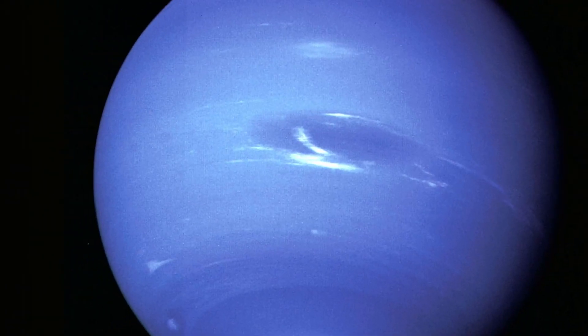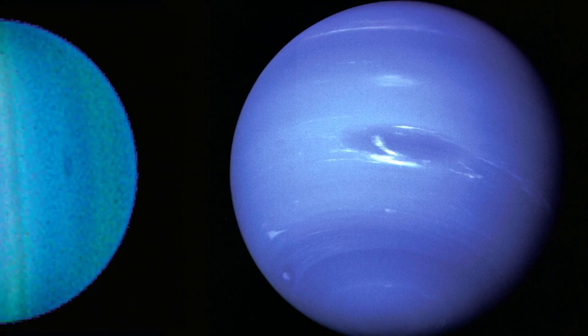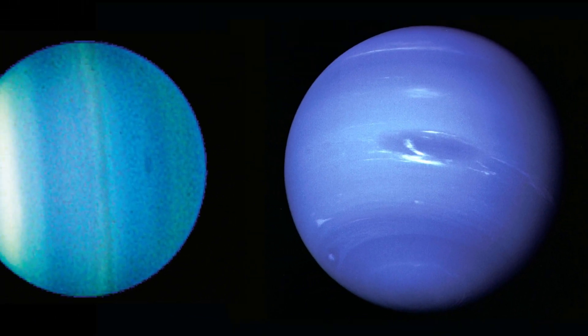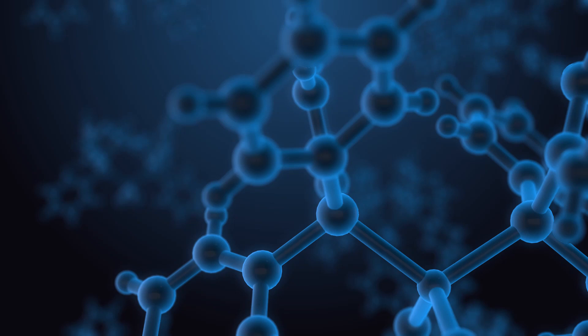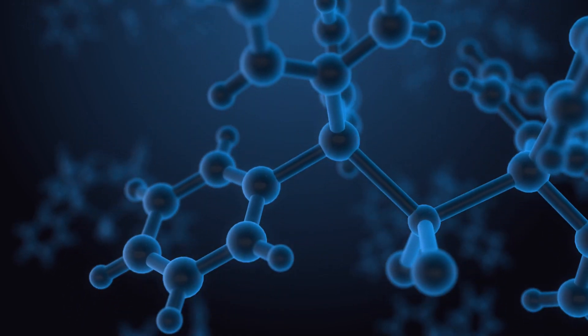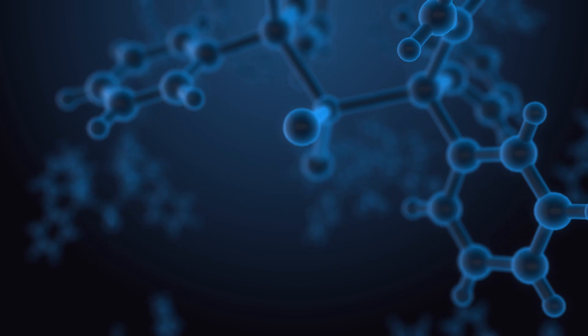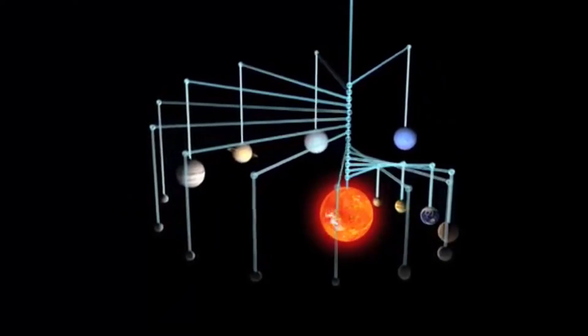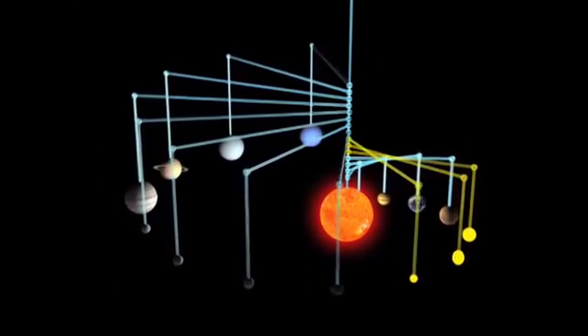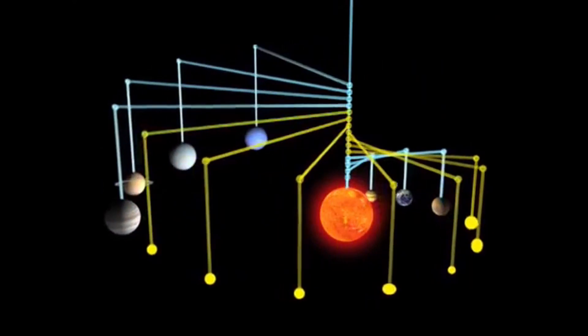Neptune is an ice giant, like its brother Uranus, but this world has an atmosphere made up of mostly molecular hydrogen, atomic helium and methane. It gives it this beautiful blue tone. Most of its mass is a hot, dense fluid of icy materials above a small rocky core.